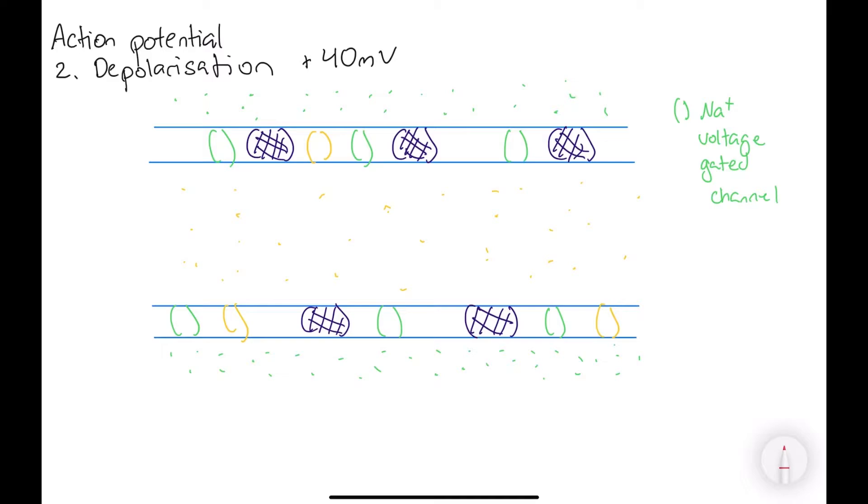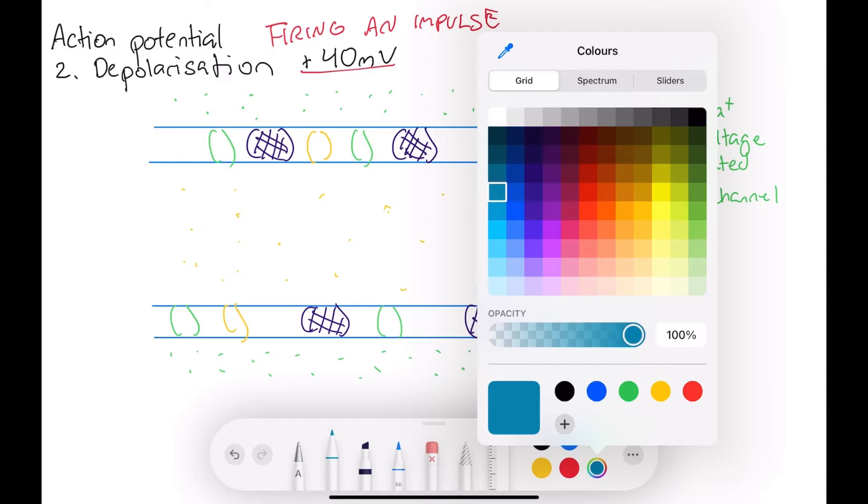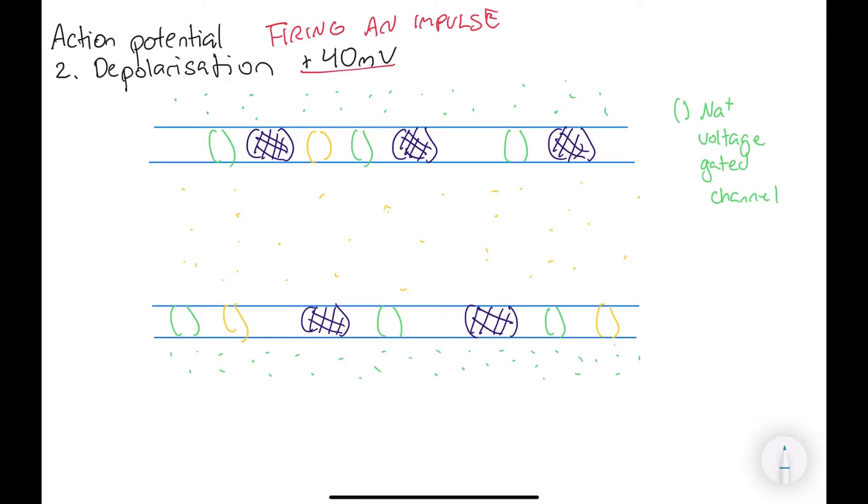Okay, so next I'll be talking about an action potential, which is when the neurons are firing an impulse, which has two main steps. The first one is depolarization, which is at positive 40 millivolts, or 30 to 40 millivolts. And it basically occurs once the neuron receives an electrical signal that is above the threshold potential.